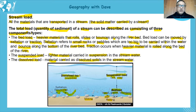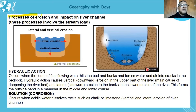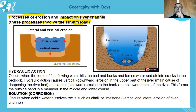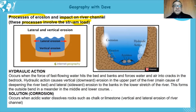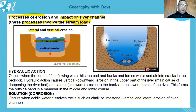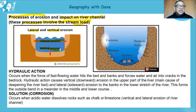Now let's look at processes of erosion and their impact on the river channel. These processes can involve the stream load. The river channel profile adjusts due to different types of erosion — lateral erosion, which erodes sideways making the river channel wider, and vertical erosion which makes it deeper. Those two alter the profile and the channel.